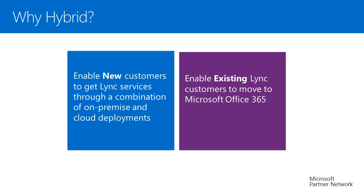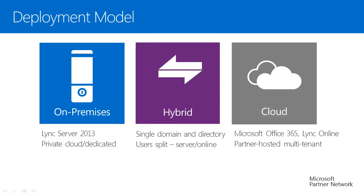Let's have a look at the deployment model in detail. Microsoft Lync Server 2013 can be deployed in three different models. One, pure on-premise server. Second, Office 365 Lync Online or partner-hosted multi-tenant solution. Third, hybrid deployment between on-premise and Office 365 Lync Online. Depending upon customer requirements, you can choose one of the deployment models.